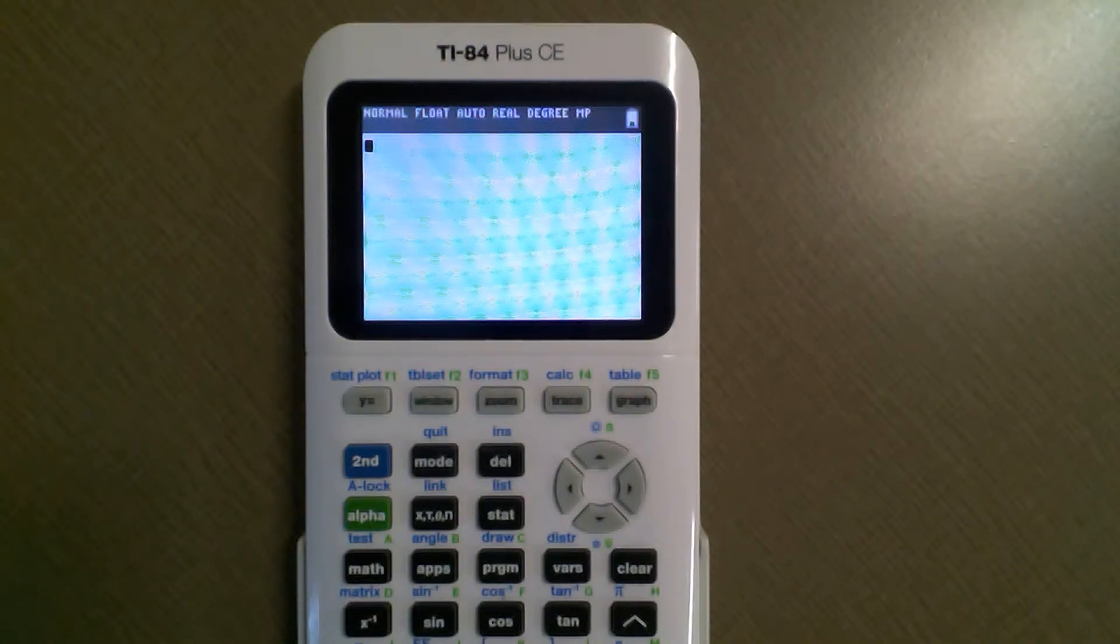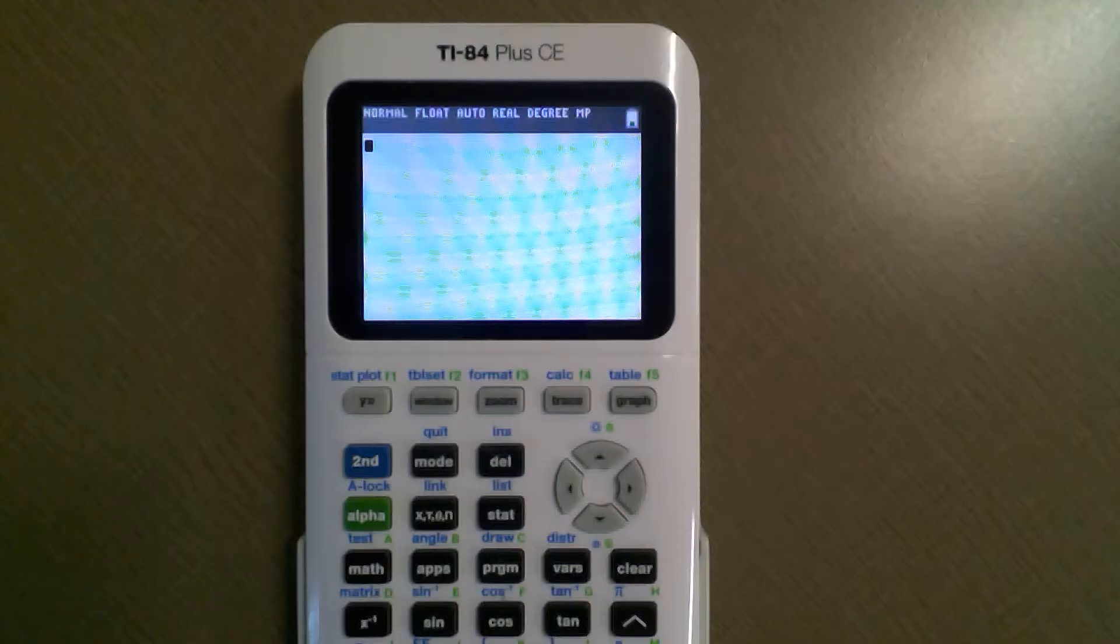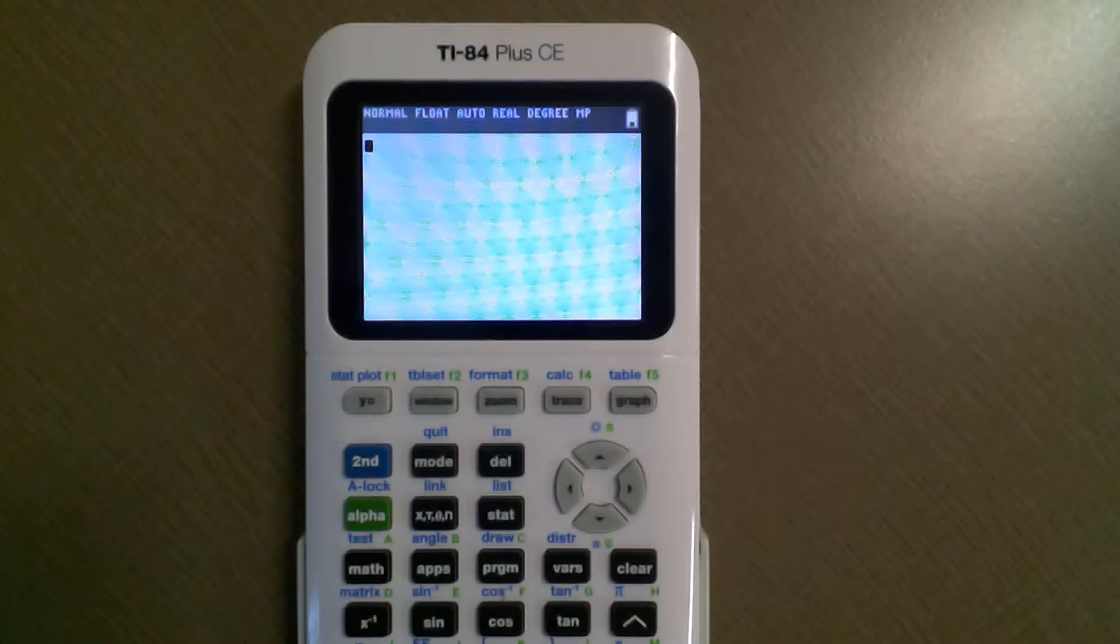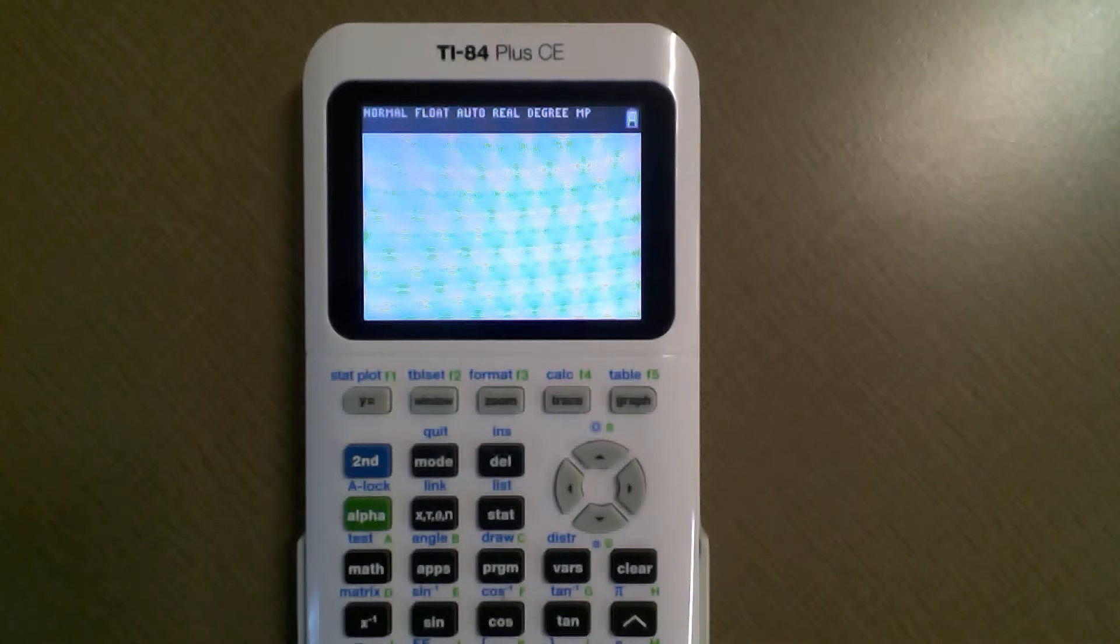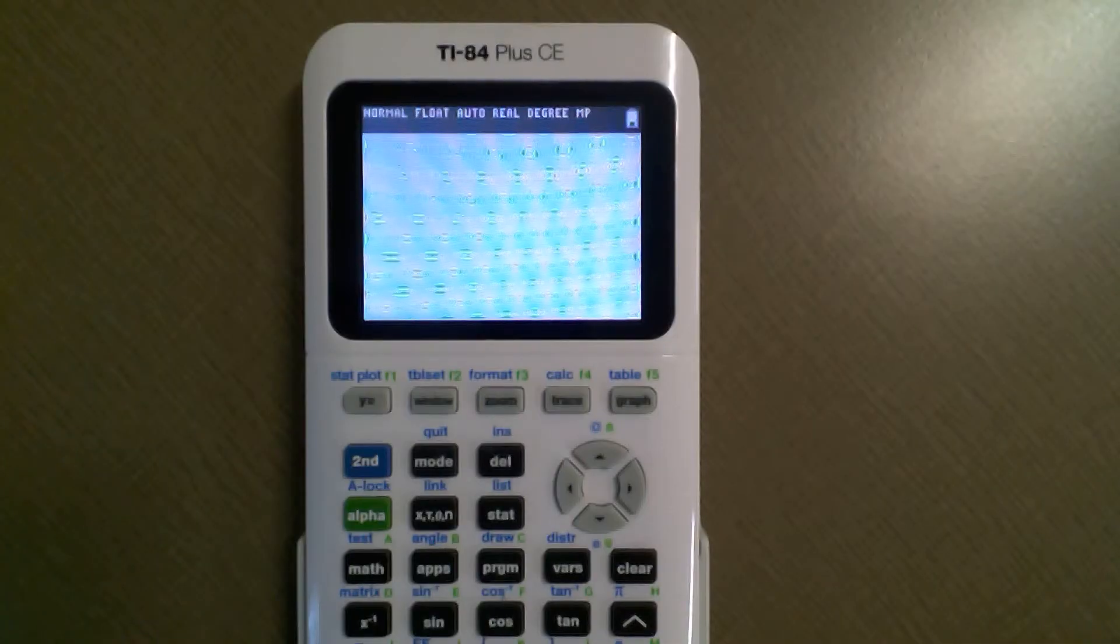In this video we're going to look at how you can find the max and min using a graphing calculator. On tests like the ACT or SAT you're not allowed to use Desmos, so this might be a good skill to have if you're doing standardized tests.